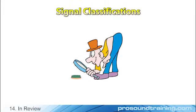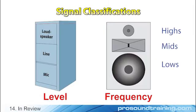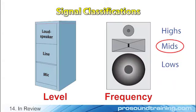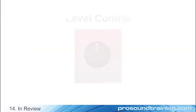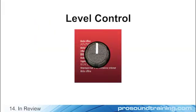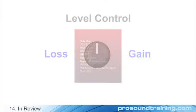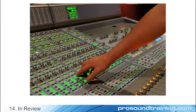In review, audio and acoustic signals are classified based on their level and frequency. The major audio levels are mic level, line level, and loudspeaker level. Depending on their spectral content, audio signals may be low-frequency, mid-frequency, high-frequency, or broadband. The level of a signal is changed by introducing gain or loss. Level changes are often based on the listening process alone, and are therefore largely subjective — where beauty is in the ear of the listener.